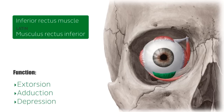During adduction of the eye, the inferior rectus muscle is again responsible for depression, extortion, and adduction of the eye. During abduction, however, which is the lateral movement of the eye away from the midline, the inferior rectus muscle is responsible for the depression of the eye.